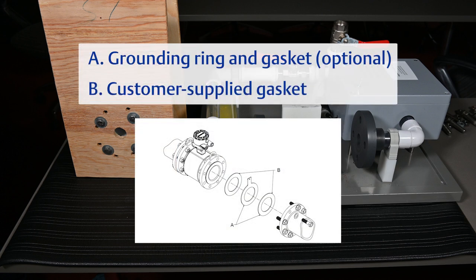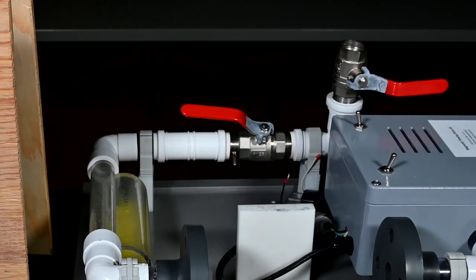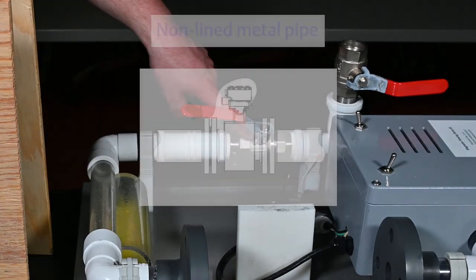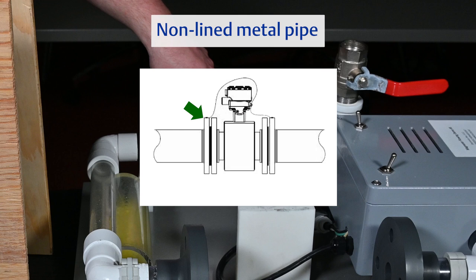Prepare the pipe for installation. Creating a good process reference is critical for magnetic flow meter operation. For non-lined metal pipe, the ground straps can be connected directly to the piping.